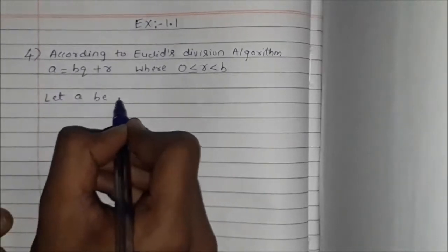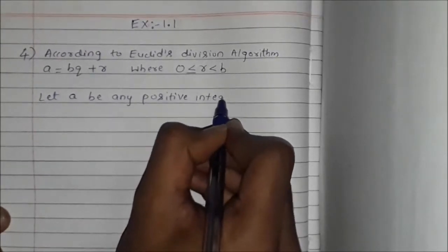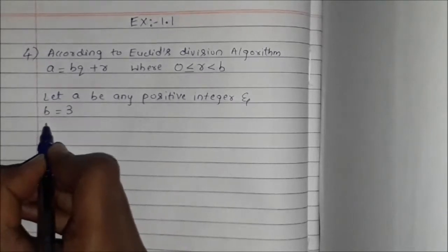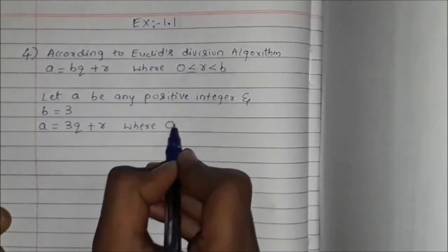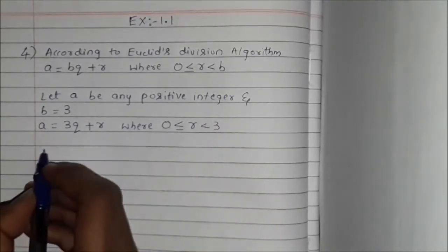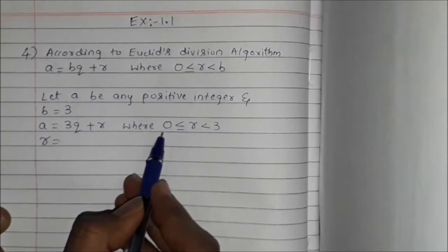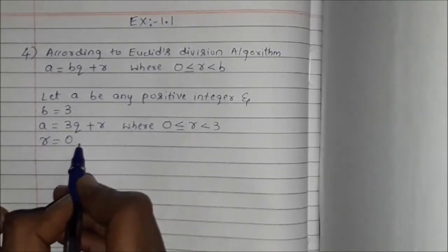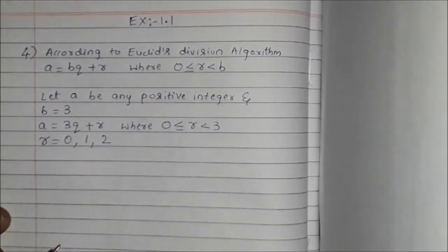Let A be any positive integer and B be 3. Now the equation becomes A is equal to 3Q plus R, where 0 is less than or equal to R, and R is less than 3, because B is 3 here. The possible values of R are 0, 1, and 2.